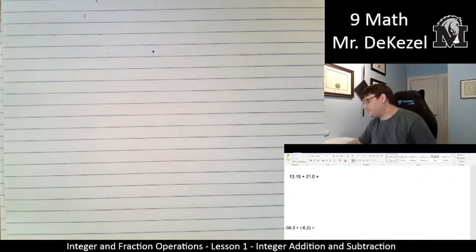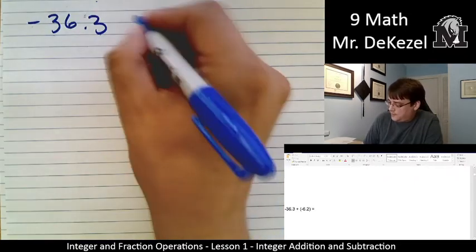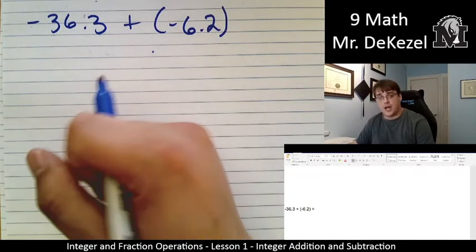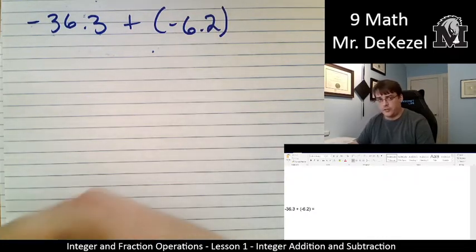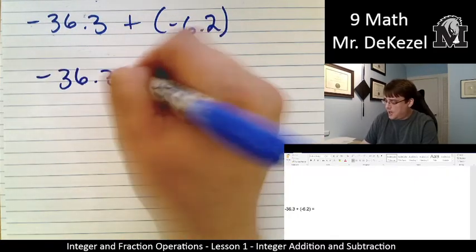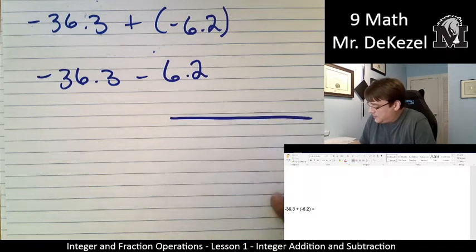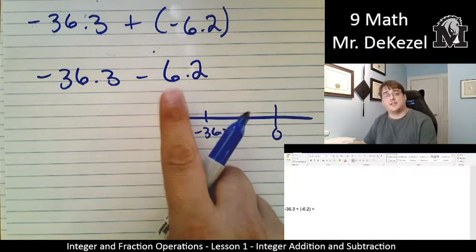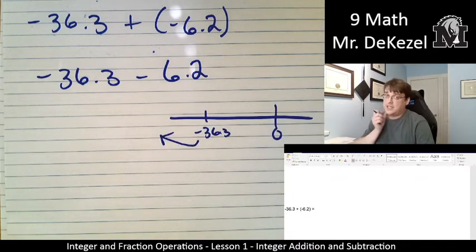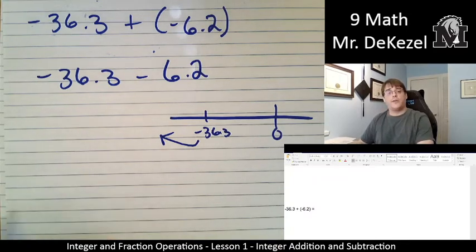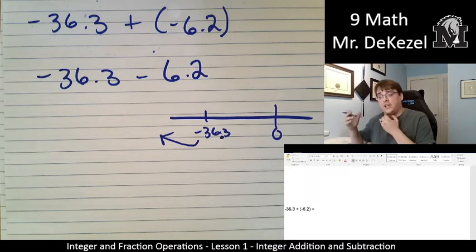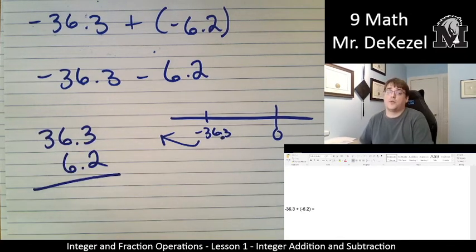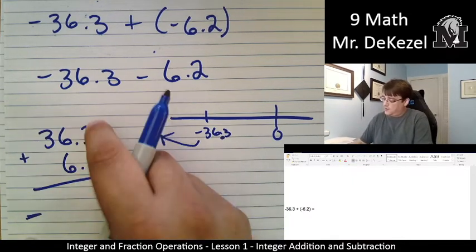Let's do one more. So we have minus 36.3 plus a negative 6.2. Okay. So in this case, we are adding a negative. And that means that we're just subtracting. Like we're adding something bad, which is overall not good. So it's minus 36.3 minus 6.2. And I'll draw a number line. If this is zero over here, we're starting at minus 36 on this side. Minus 36.3. And we're subtracting 6.2. We're going even farther in that direction. In this case, what we're going to do is we're going to actually add these numbers together and know that our result is going to be negative. We are going to get larger in the negative direction.